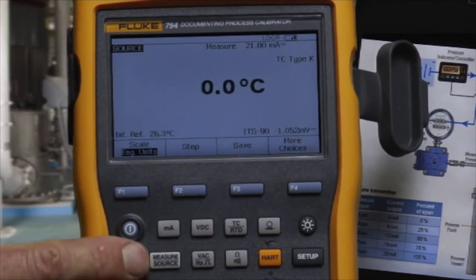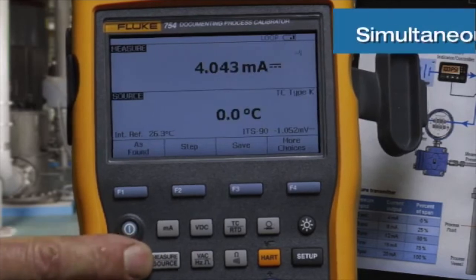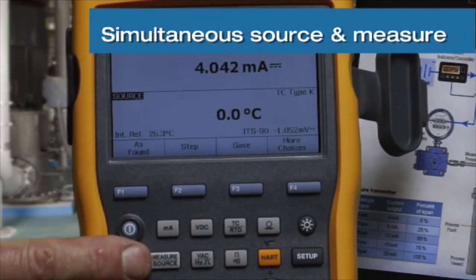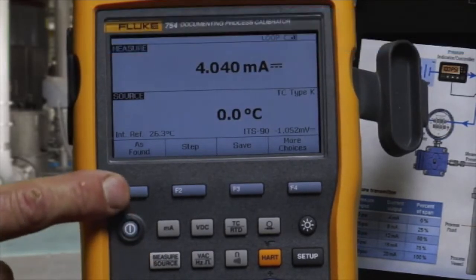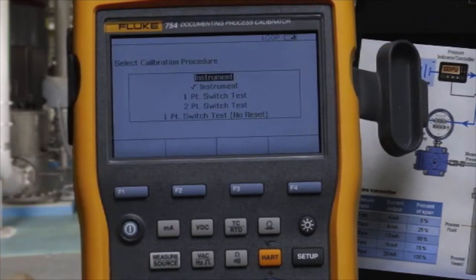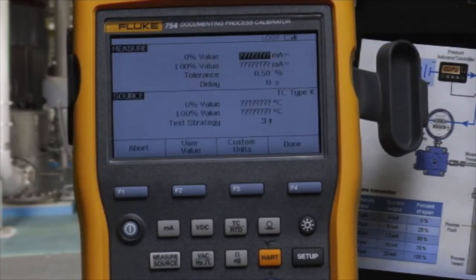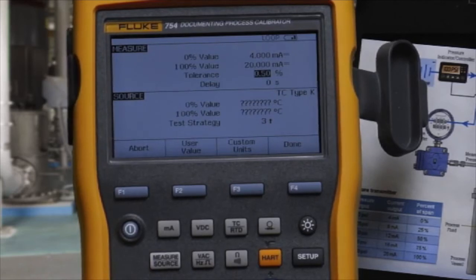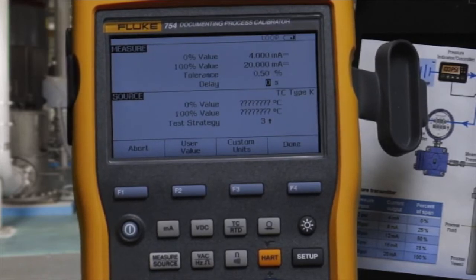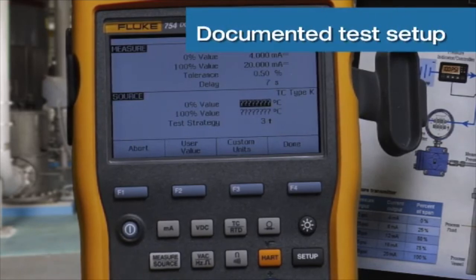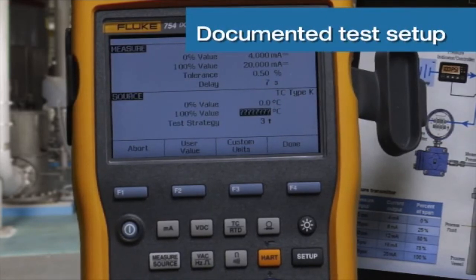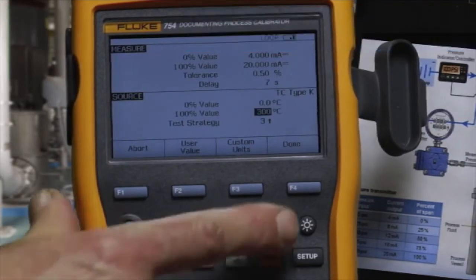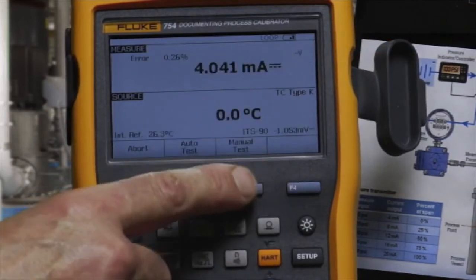Enter the split screen to do the calibration test. Select as found for an instrument. Configure what we're going to measure, 4 to 20 milliamps. 0.5 percent. Set settling delay, and source 0 to 300 degrees C and a three-point test.